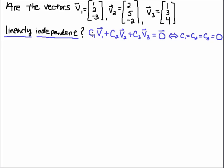The definition is that if you take some scalar C1 times the vector V1 plus C2 times V2 plus C3 times V3, if you set that equal to the zero vector, then the vectors are linearly independent if and only if C1, C2, and C3 are zero. So that means that is the only solution to this linear system of equations.